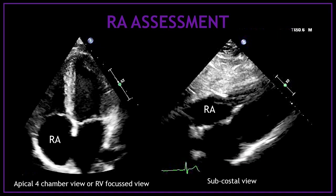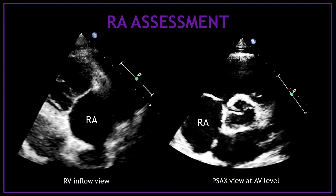The following are the views we can use to assess and visualize the right atrium. On the left you can see the apical four-chamber view. You can also use the right ventricular focus view. On the right hand side you can see where the right atrium is located from the subcostal view. You can use two more views: the right ventricular inflow view, and the parasternal short axis view at the aortic valve level.